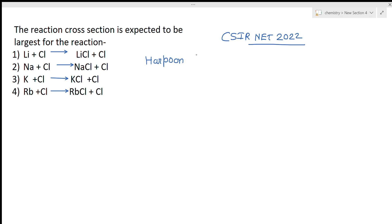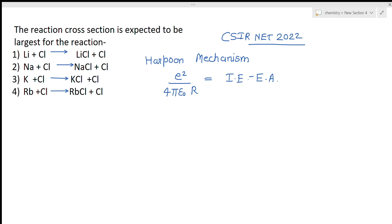This question is based on the Harpoon mechanism. According to the Harpoon mechanism, the formula is: e² / (4πε₀r) = Ionization Energy − Electron Affinity. In this formula, the left-hand side prefactor e² / (4πε₀) is a constant and will not change.